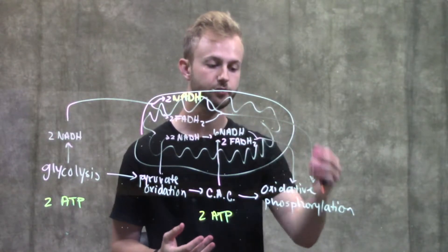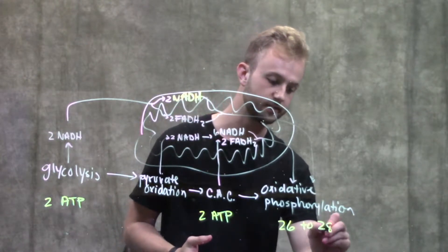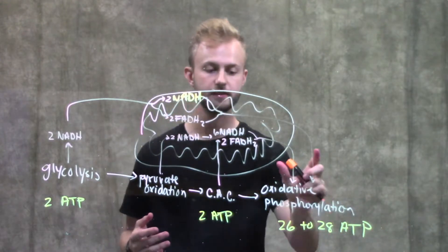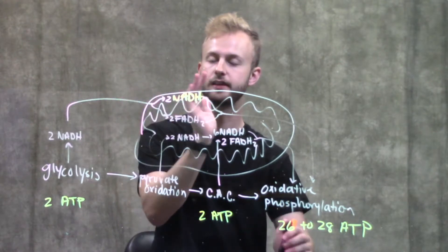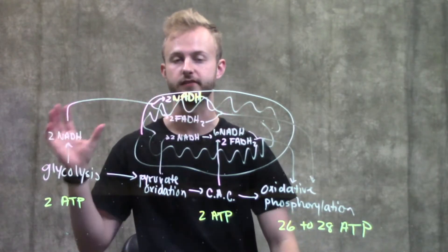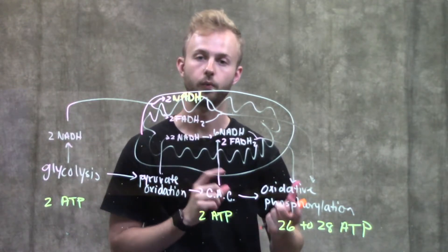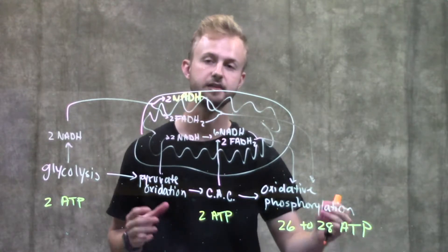When we do that, we produce 26 to 28 ATPs. Again, this variation is coming from how the NADH was transported from the cytoplasm in glycolysis into the mitochondria, because there can be differences depending on what transport system you use. That'll produce 26 to 28 ATPs.